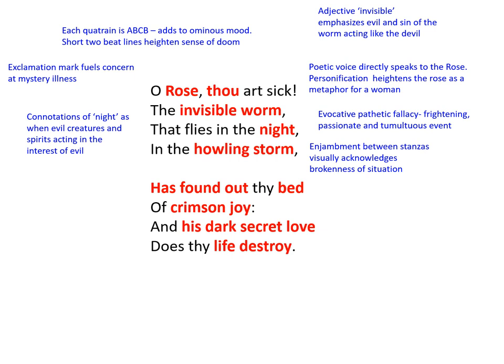By line five, we're told that the sin has been exposed — it's been found out. And this echoes Psalm 90, verse 8, where it references 'secret sins in the light of thy countenance,' which is essentially saying God keeps a track of every single sin you've ever made.